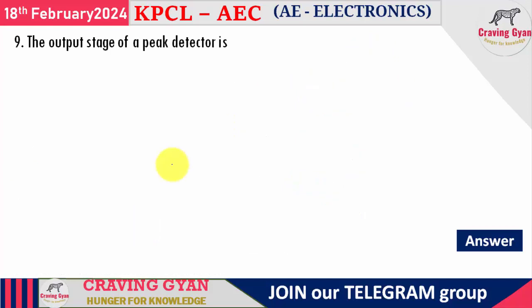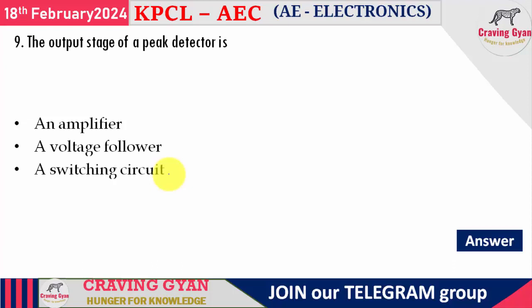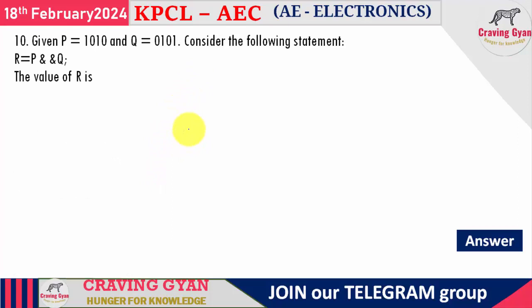Ninth question: the output stage of a peak detector is — amplifier, voltage follower, switching circuit, or rectifier? We know that it is a voltage follower, so option B is correct. Many good questions have been asked from op-amp topics, and you can score easily from this area.